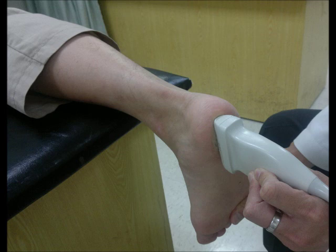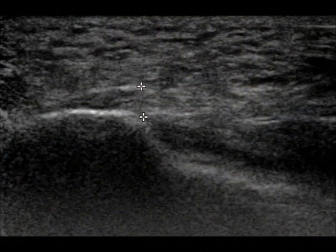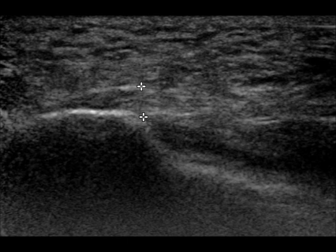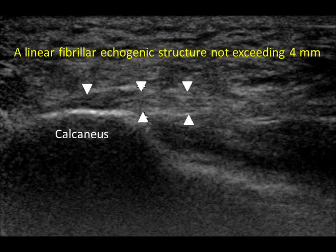In the long axis view, the plantar fascia can be identified by showing a linear fibrillar echogenic structure attached to the calcaneal cortex. The whole length of the fascia should be traced carefully. As the fascia is thickest at the proximal end, its thickness is measured at the proximal attachment to the calcaneus. Normally, the thickness of the fascia should not exceed 4 mm.